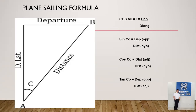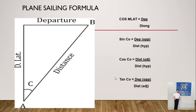Remember the mnemonic SOHCAHTOA. Looking on the right, we have: sine course equals departure over distance — wherein sine is opposite over hypotenuse — and then cosine course equals D.Lat over distance. D.Lat, gentlemen cadets, because if you travel from point A up to a certain point, you will measure the difference of latitude. When you say difference, you subtract, but the sign will depend on the direction you are going.